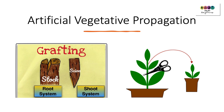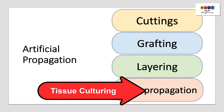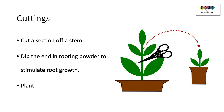We've discussed natural vegetative propagation, but now we have to discuss artificial vegetative propagation and give four examples: cuttings, grafting, layering, and micropropagation, otherwise referred to as tissue culturing. With cuttings, you simply cut a section off a stem and dip the cut end into rooting powder. This powder stimulates root growth, and then you plant it and it will grow into an identical plant to the parent plant.